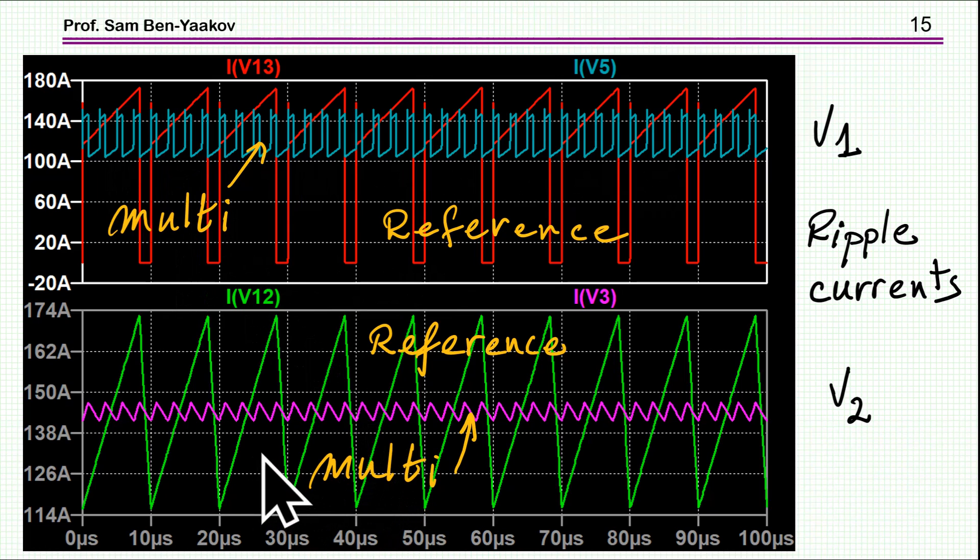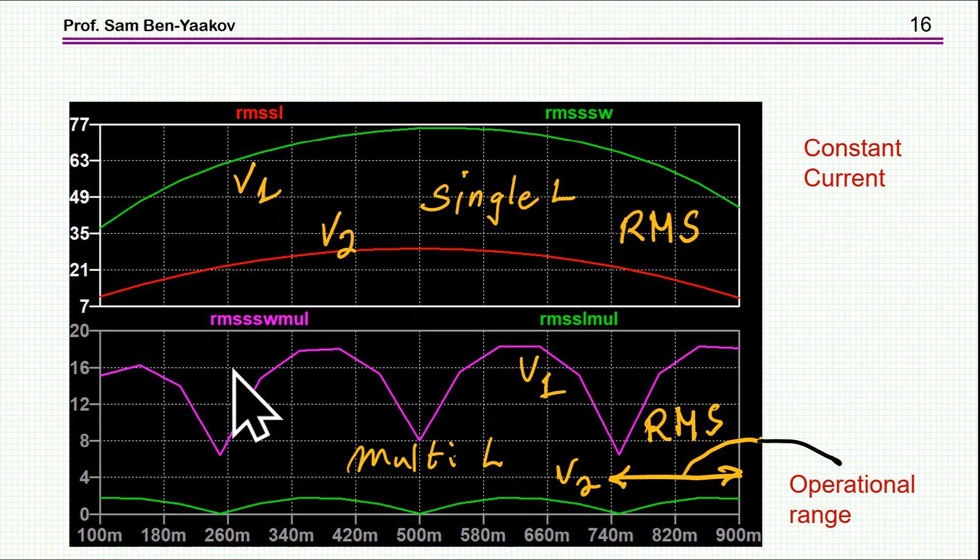That is where all the inductors are sort of funneled in. And then we have the ripple of one inductor if it would have been one inductor only, and of the four inductors. Quite a bit of an attenuation of the ripple, which is of course very desirable.